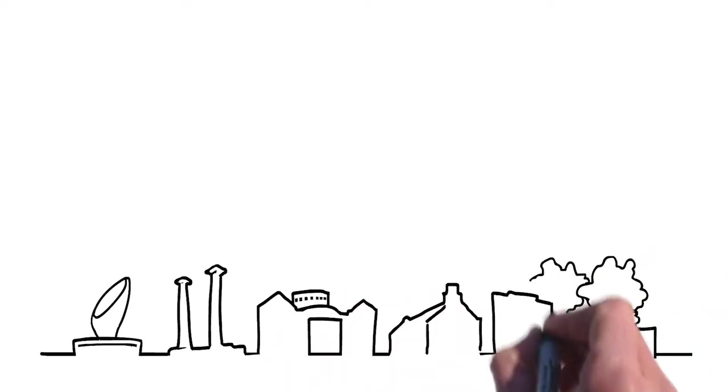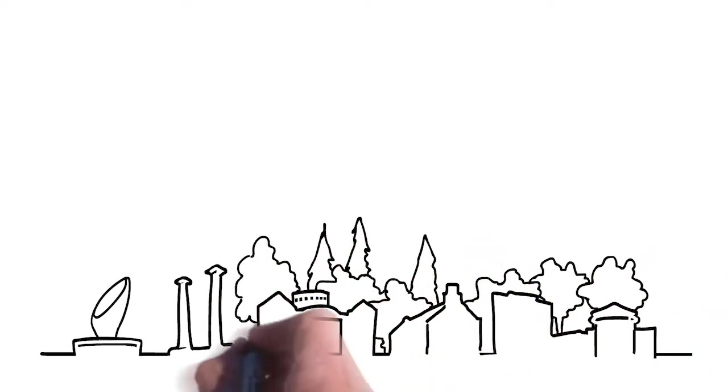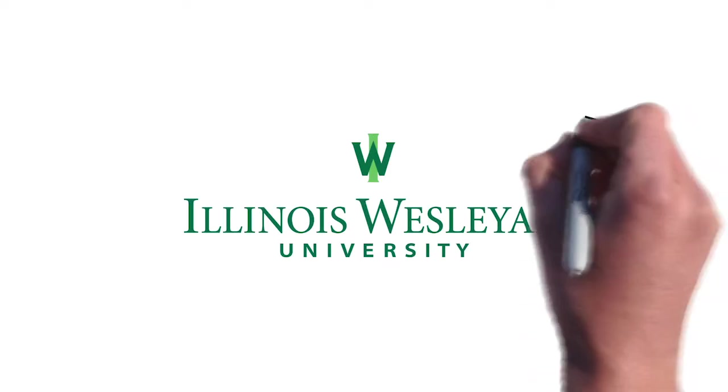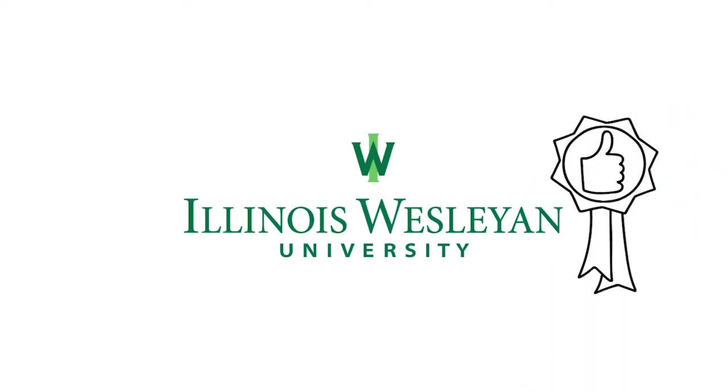We are Illinois Wesleyan University. We're the small private college founded in 1850 set on 80 beautiful acres south of Chicago and north of St. Louis with rankings that place us at or near the top of almost every important way you measure a university.